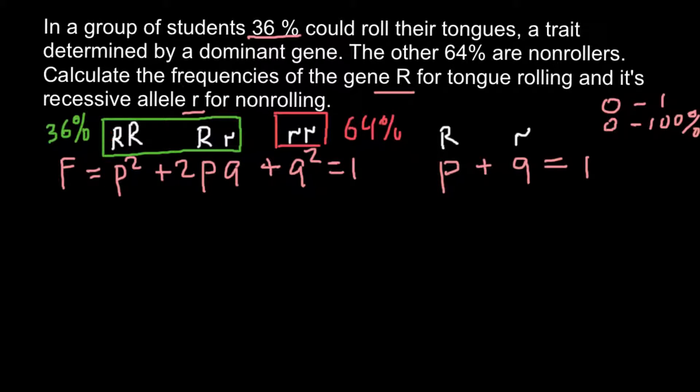If we take a look at the dominant phenotype, can we say the frequency of the dominant allele R? No, we can't, because some of this dominant phenotype is made by homozygous dominant genotype and some by heterozygous genotype. So we cannot say the frequency of the dominant allele because the recessive allele is also present here.